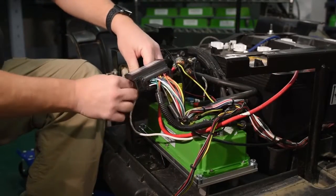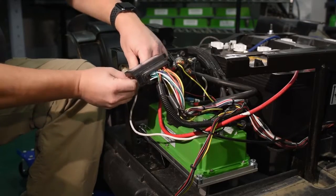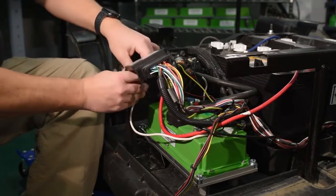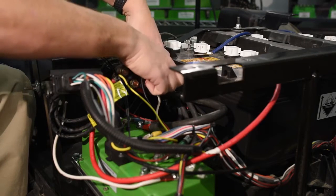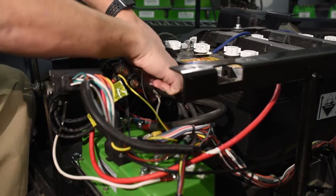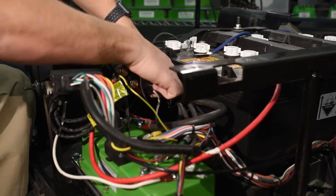Once done, zip tie this to the resistor cage. Zip tie the motor phase wires to the resistor cage to make sure they don't move.